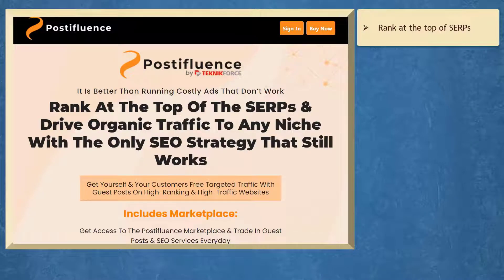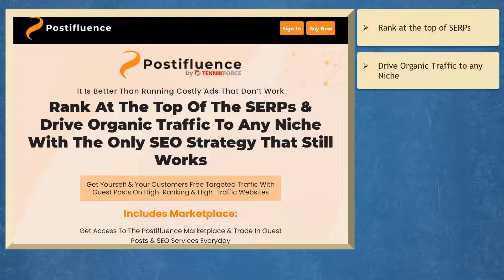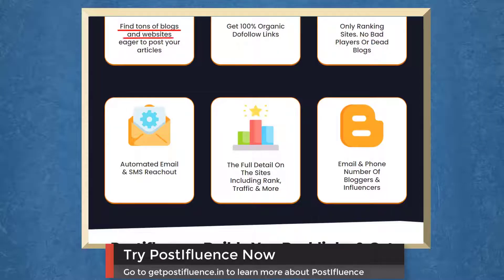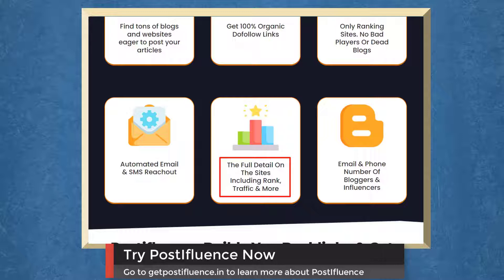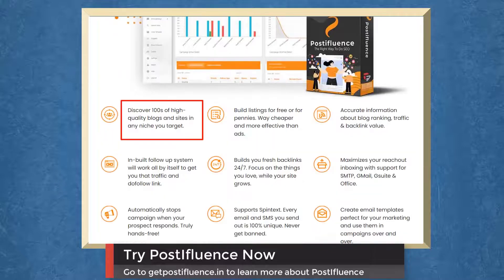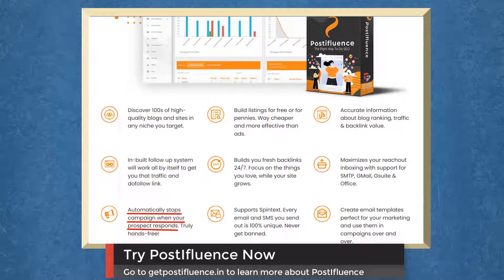If you need to rank at the top of the SERPs and drive organic traffic to any niche with the only SEO strategy that still works, we have a marketing app that can help you get leads. Using Post Influence, you can find tons of blogs and websites eager to post your articles, get 100% organic do-follow links, use ranking sites, automated email and SMS outreach, and get full details on sites using rank traffic. You can get the email and phone number of bloggers and influencers — Post Influence gets you new traffic with hands-free ease, discovering high-quality blogs in any niche with an inbuilt flow system.